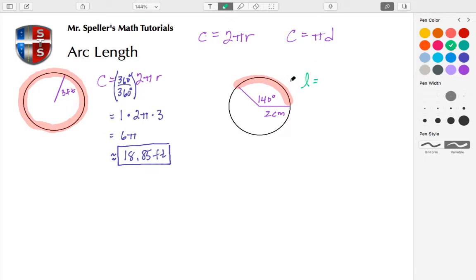So here we're going to still use the formula and actually I'm gonna switch it up and say L for the arc length. We'll call that L, so L is equal to 140 degrees, which is the part out of a total of 360 degrees, which again is just going to be a percentage or a fraction of the entire circumference.